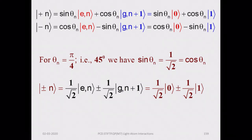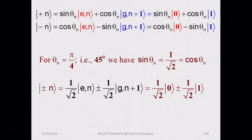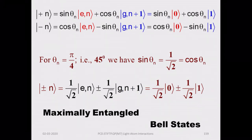I would like to emphasize the point from the previous class: when the angle of the unitary transformation is 45 degrees, sine theta and cosine theta are both equal to 1/√2. Their squares are both 1/2, and they add up to 1. Both states come in exactly equal proportions — the coefficient of state |0⟩ is exactly the same as the coefficient of state |1⟩ — and these are maximally entangled Bell states.